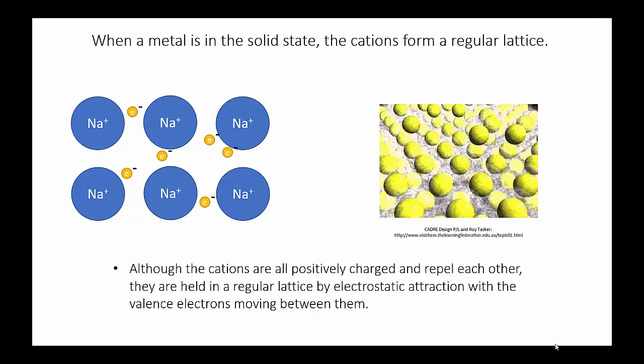If there were nothing else there, these positive ions would repel each other and the lattice would collapse. However, the sea of delocalized valence electrons occupies the space between the positive ions like glue, and the electrostatic attraction between those electrons and the ions holds the lattice together.